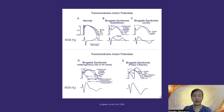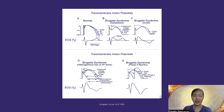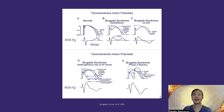From physics, we know that when there is a difference in membrane potential, current ensues. It is this current of injury that is manifest on the electrocardiogram, which we have previously defined as the Brugada ECG pattern.